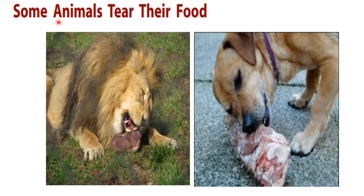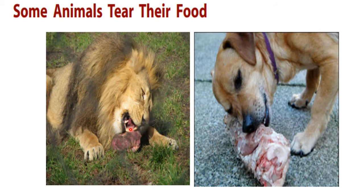Some animals tear their food. Have you all seen the dog and cat? They tear their food because they have sharp pointed front teeth. Animals like lion, dog, fox, and cat first tear the flesh with their sharp pointed front teeth. Their teeth are very sharp, which helps them to tear the flesh, and then they chew it with their grinding teeth.